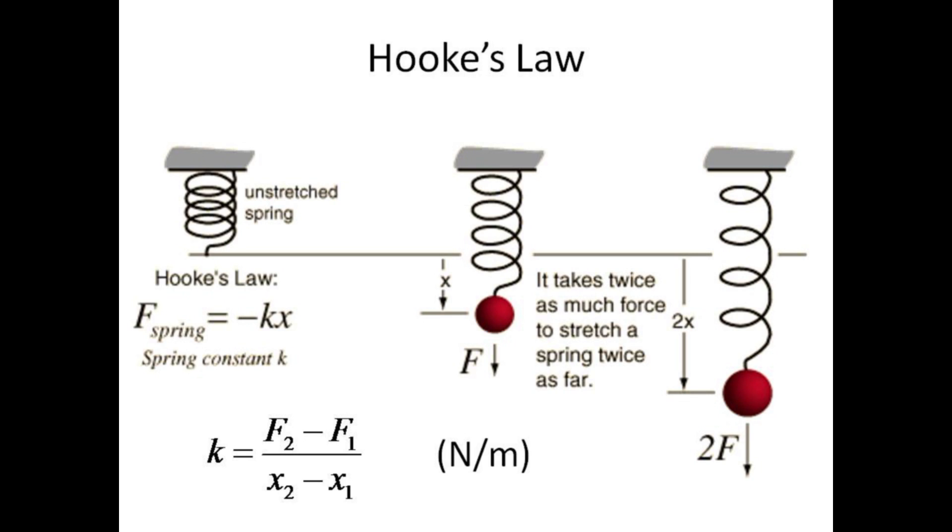k will be the difference between the two forces divided by the difference in the two positions, and will have units of newtons per meter. k tells us how many newtons of force would be required to stretch the spring one additional meter.